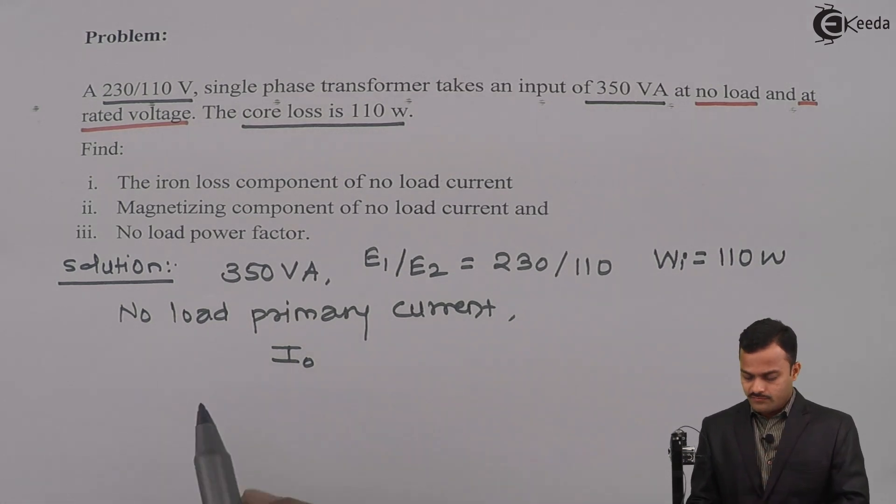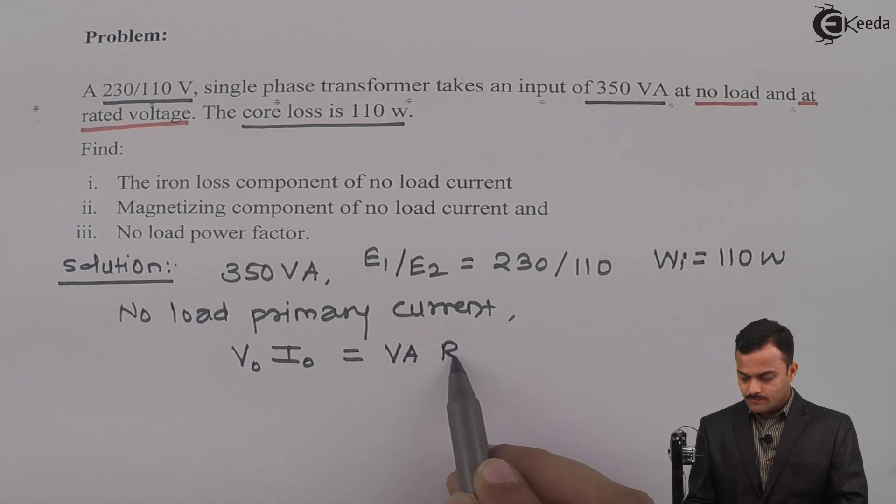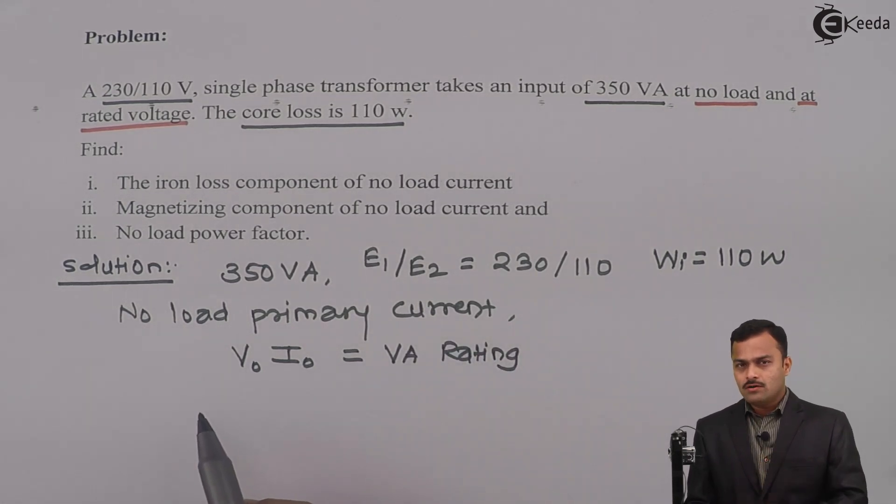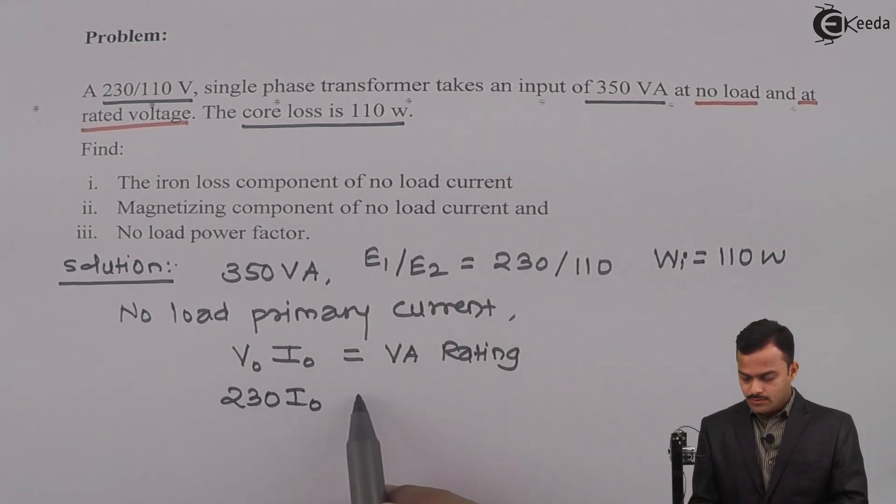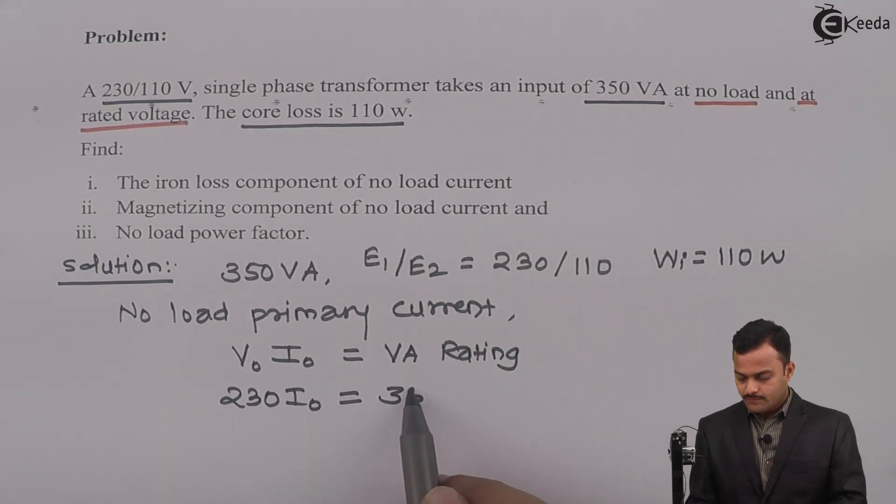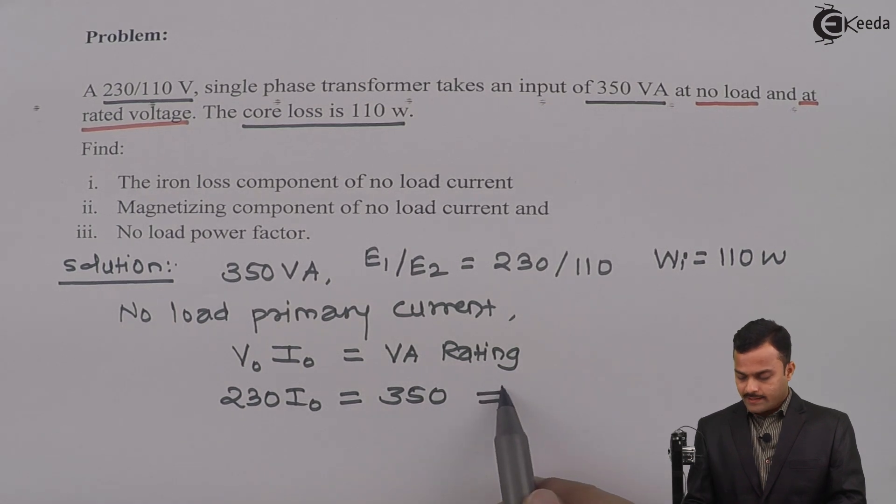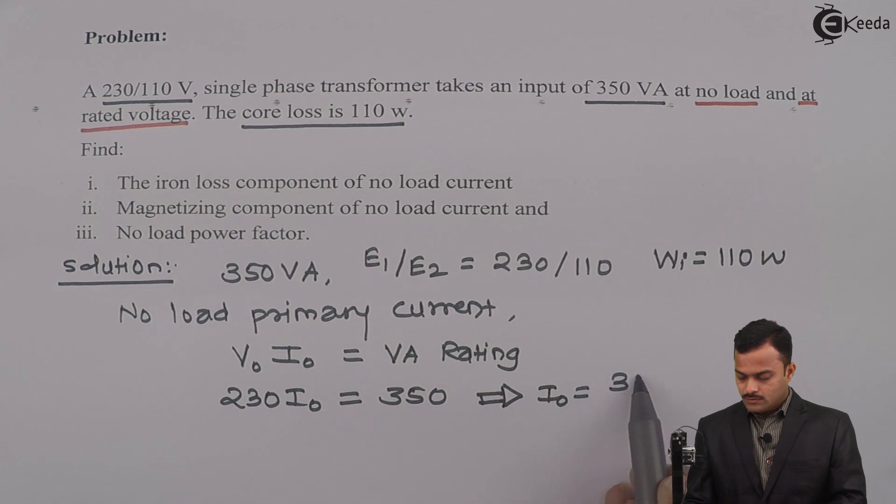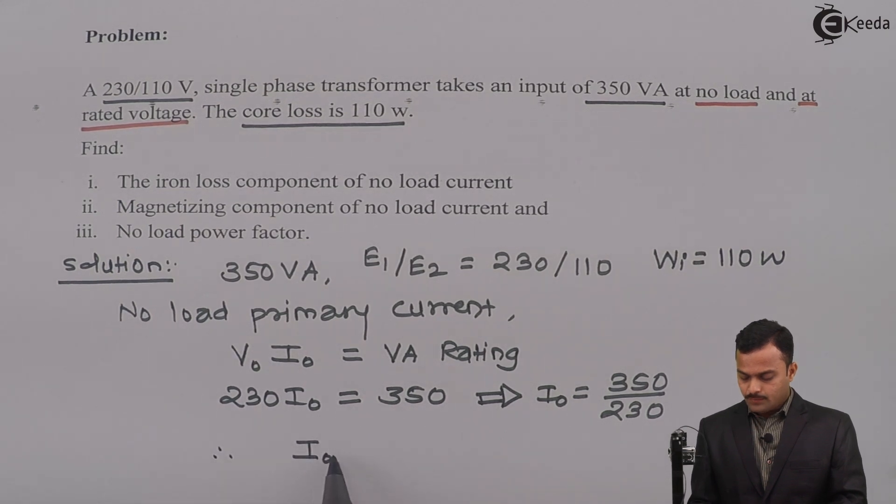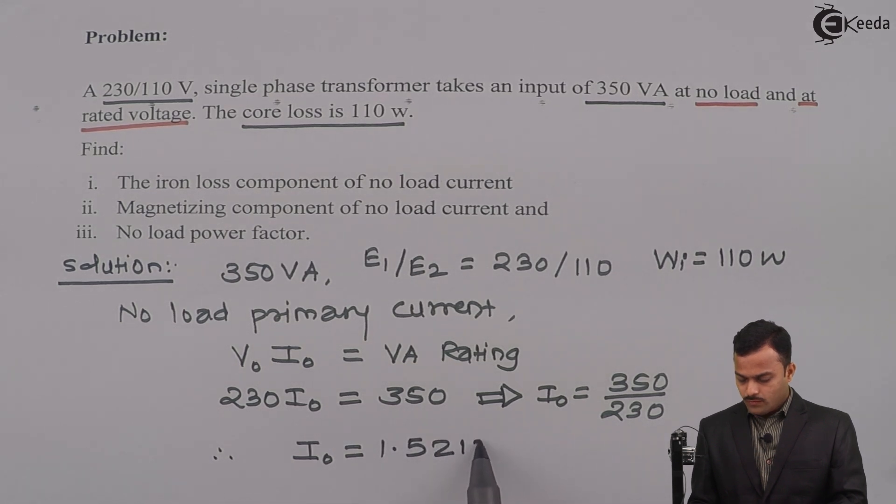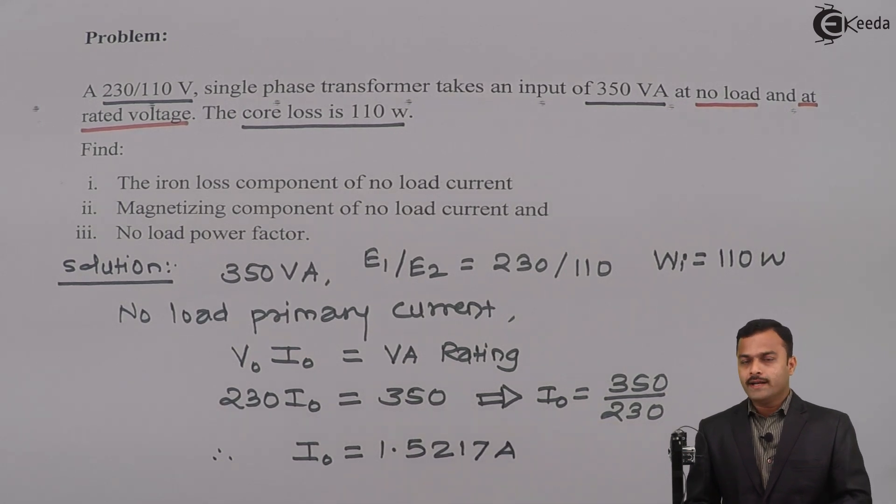So I₀ is the no load primary current when we apply a rated voltage at the primary side which I will call as no load primary voltage V₀, and that is equal to VA rating of a transformer. So V₀ is nothing but primary side induced EMF equal to 230, so 230 multiplied by I₀ equals 350. From this I can get I₀ which equals 350 divided by 230, so if you solve you will get no load primary current I₀ = 1.5217 ampere.